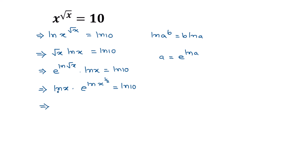Now, ln of x times e to the power — applying the formula ln of a to the power b equals b times ln of a — we get ln of x to the power 1/2, so this becomes 1/2 times ln of x, equal to ln of 10 on the right side.